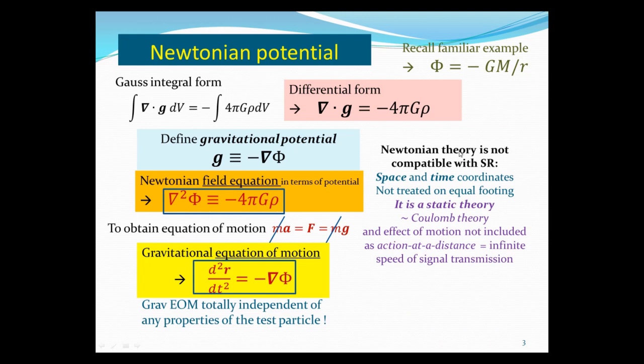But the point is Newton's theory is not compatible with special relativity. First of all, the space and time coordinate are treated not on equal footing. In fact, there's no time dependence here. So only have complicated, maybe complicated space dependence, no time dependence. And in fact, it's a static theory. It's like Coulomb's static electrostatics. And the effect motion are not included. And also remember, we're talking action at distance force, which implies an infinite speed of signal transmission, which is not compatible. This is saying that the fastest you can transmit it is the speed of light. So therefore, we need to seek a relative theory of gravitation, which really means how to generalize this field equation and equation of motion to be compatible with relativity.